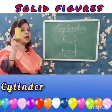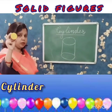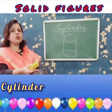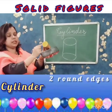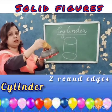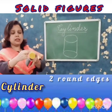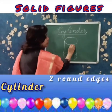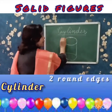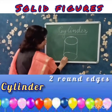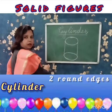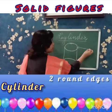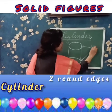Cylinder has how many edges? Can you tell me? It has two curved edges. This is one curved edge, and this is another curved edge. So these are the two edges of a cylinder.